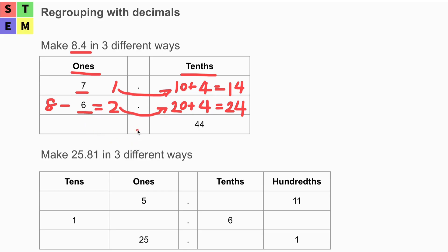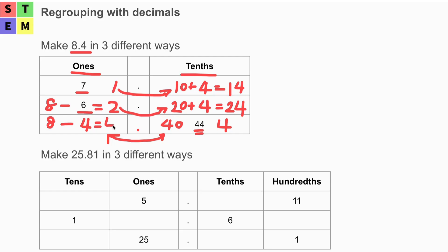In the third row, at the tenths place we have 44. We know 8.4 has a four at the tenths place, so 40 must come from the ones place. If we put 40 at the tenths place, that accounts for four ones moved there. Originally we have eight at the ones place, so eight minus four equals four — leaving four at the ones place.